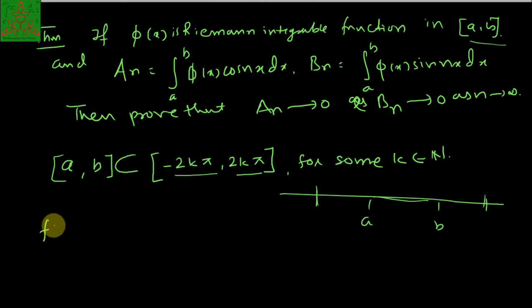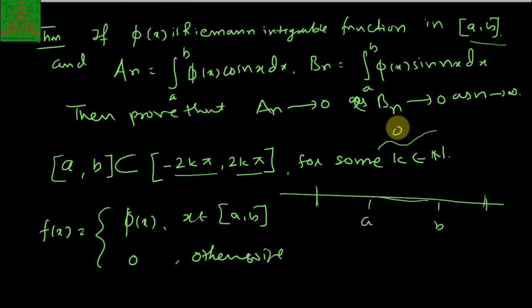Now I am defining one function f(x) which equals φ(x) if x is in the interval [a,b], and it is 0 otherwise. If x is not in this interval, then it has value 0. Suppose in the interval the value of the function is φ(x). Outside this interval, here and here, the value is 0. So the graph of the function f is this, which I have drawn in red.